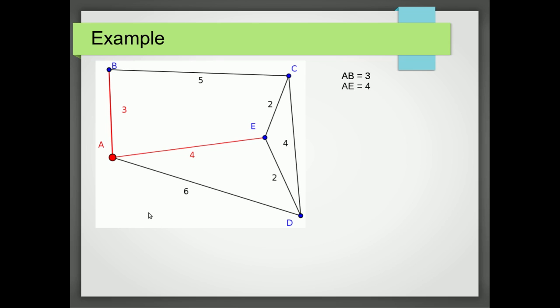Now what's the shortest path connected to either A, B or E? Well that could either be ED or EC, and it doesn't matter which one you pick. So I'm going to pick EC and that's a length of 2. I'm now going to record that by saying EC equals 2.